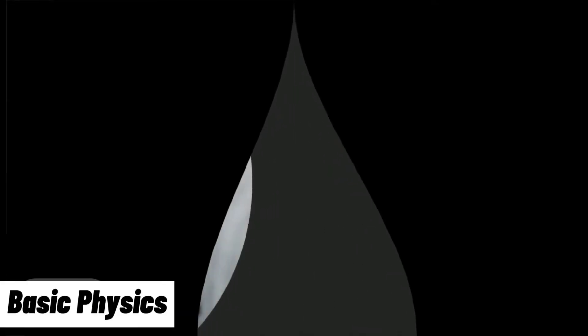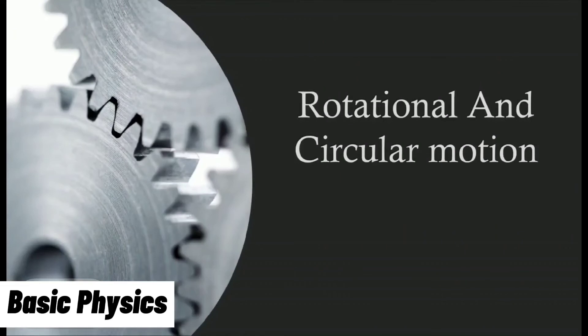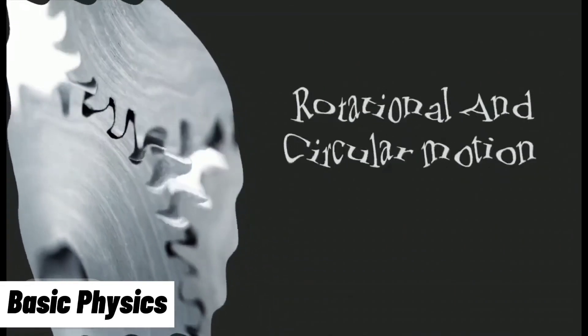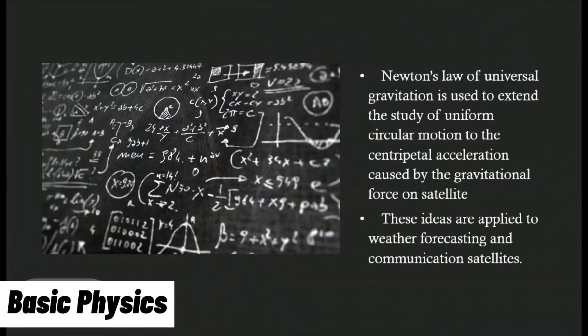Hi everyone, today our topic is rotational and circular motion. Newton's law of universal gravitation is used to extend the study of uniform circular motion to the centripetal acceleration caused by the gravitational force on satellites. These ideas are applied to weather forecasting and communication satellites.